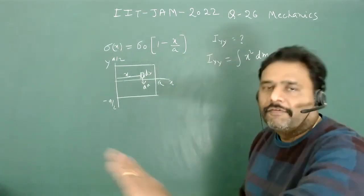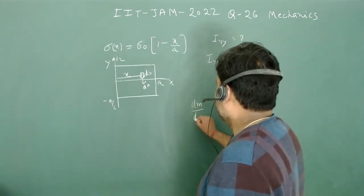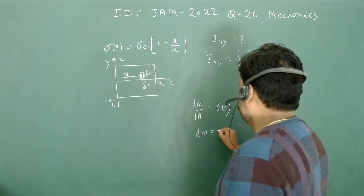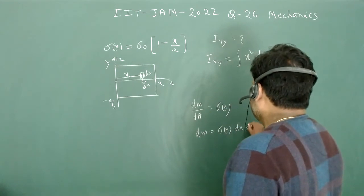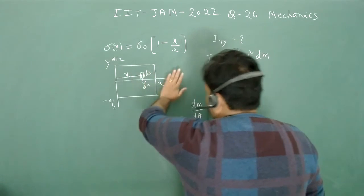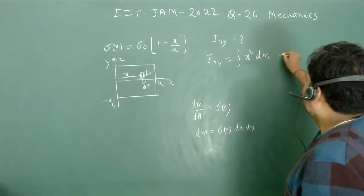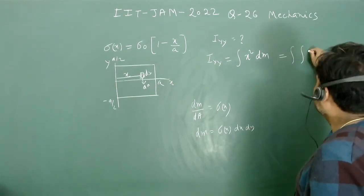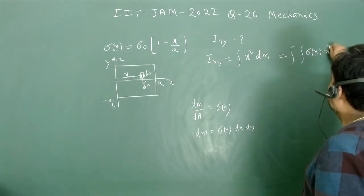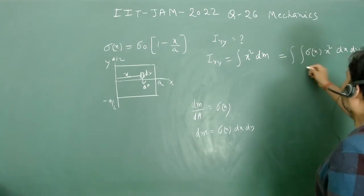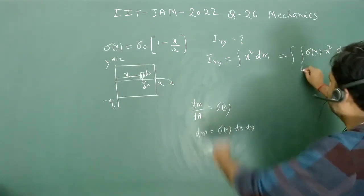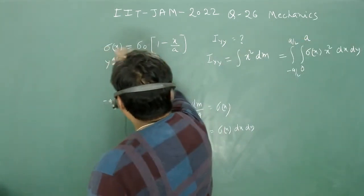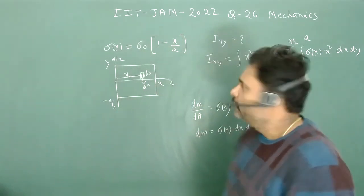The mass is confined to a two-dimensional plane, so dm/dA = σ(x). Therefore dm = σ(x) dx dy, since the area element in the sheet is dx·dy. This gives two integrations: one over x from 0 to a, and one over y from -a/2 to +a/2. Since σ is a function of x only, we can separate the x and y integrals.